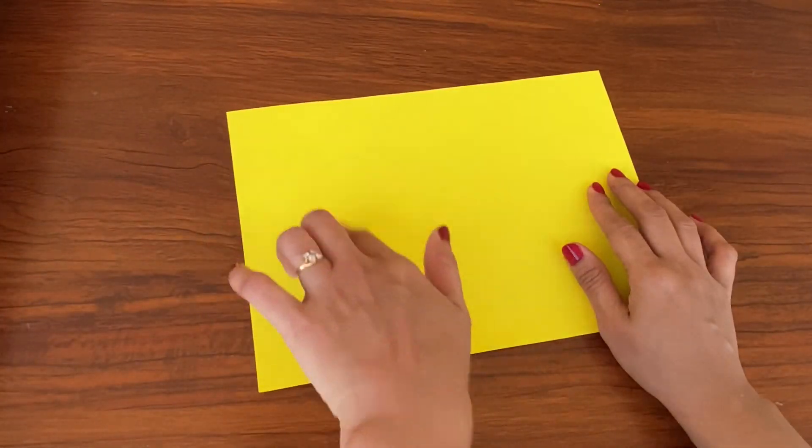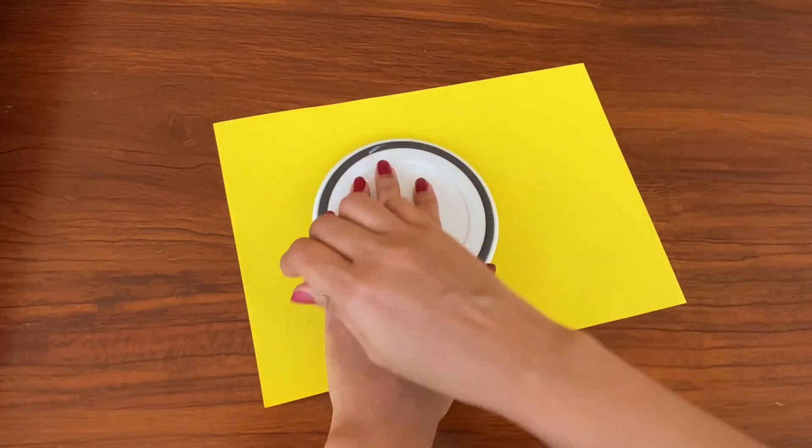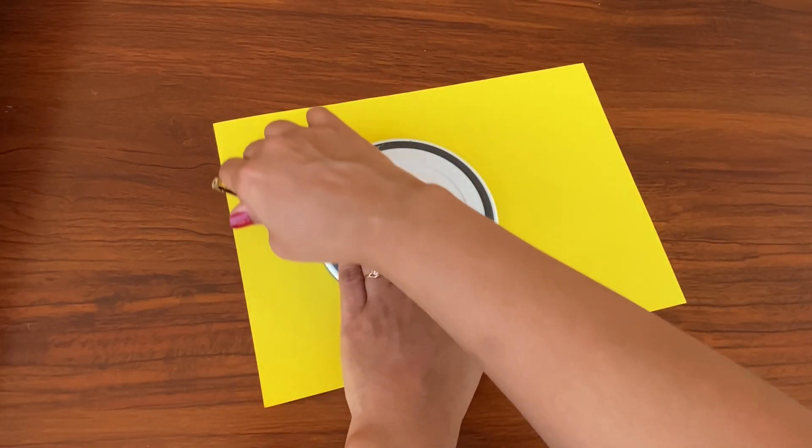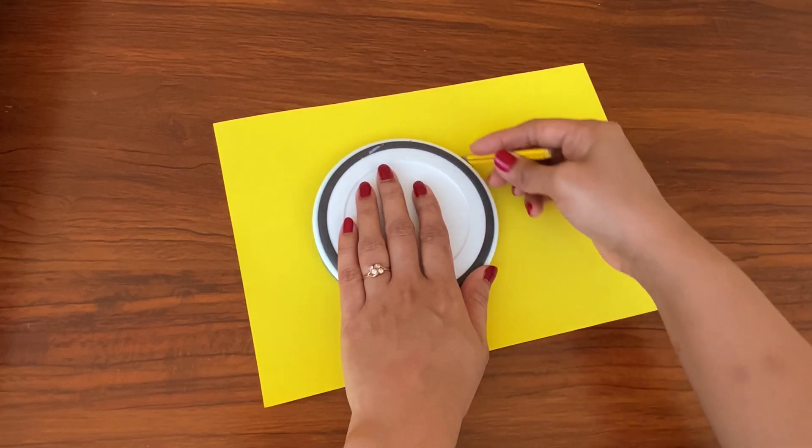Take a color paper of choice and draw a circle. Now depending on the size of the flower you will need to draw a circle. So bigger the circle, bigger the flower.